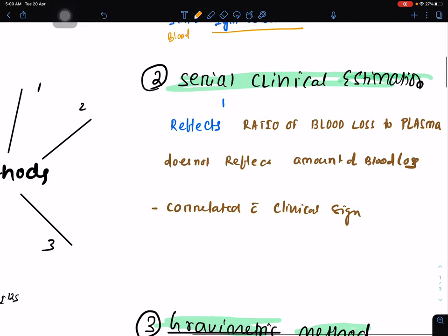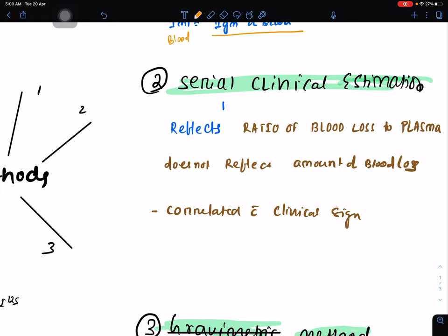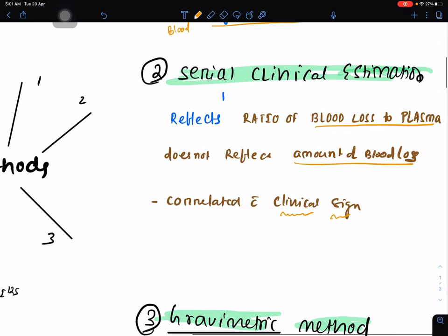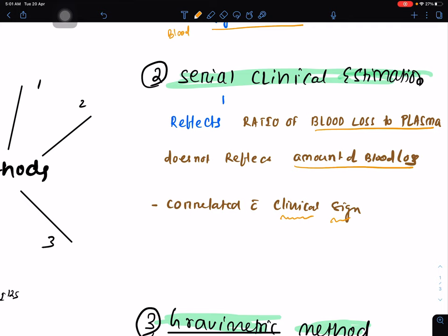Second one is serial clinical estimation, which reflects the ratio of blood loss to the plasma. It does not reflect the amount of blood loss, which is correlated with clinical signs like hypotension, tachycardia, sweating, and flushing.